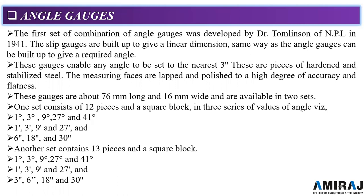The first set consists of 12 pieces and a square block in three series of values of angles. The first set of 5 angles in degrees is 1, 3, 9, 27 and 41. The second angle set is 1, 3, 9 and 27 minutes. The third angle set is 6, 18 and 30 seconds. In three different sets they are available. And the second set is 13 pieces and one square block. The additional gauge we will use here is 3 seconds gauge. So this is about the angle gauges.